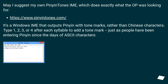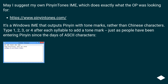May I suggest my own Pinyin Tones IME, which does exactly what the OP was looking for. It's a Windows IME that outputs Pinyin with tone marks, rather than Chinese characters. Type 1, 2, 3, or 4 after each syllable to add a tone mark, just as people have been entering Pinyin since the days of ASCII characters.